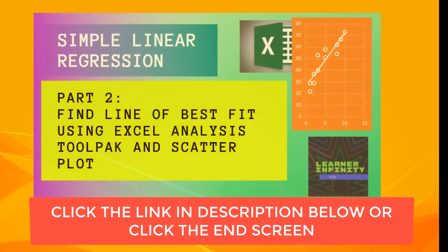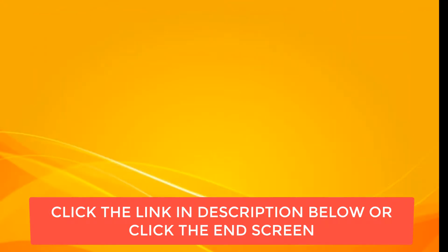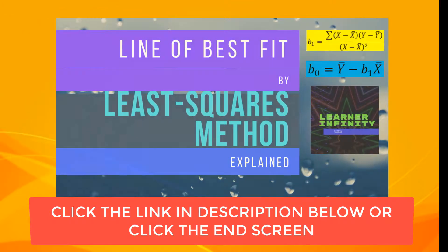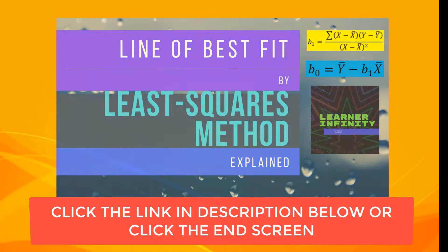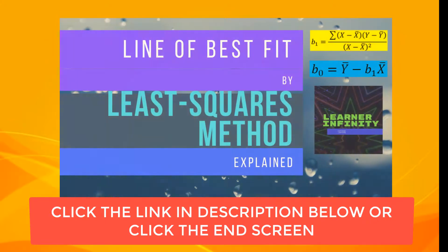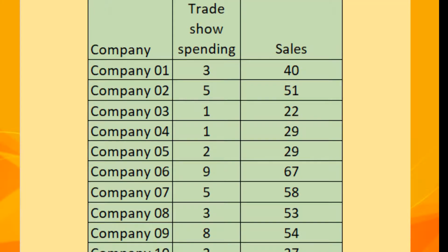To know how this equation was formulated, you can watch videos on line of best fit by Excel analysis toolpak and scatterplot, and also the least squares method explained — links are in the description below or in the end screen after watching this video. Based on our data, company 07 has trade show spending of five.